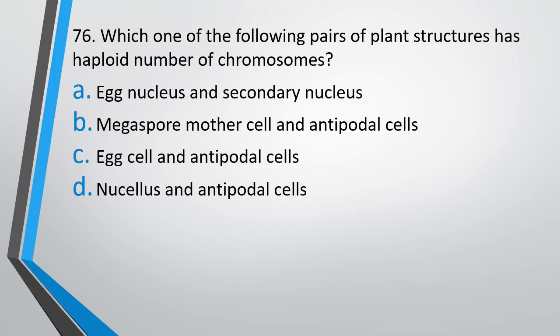Question No. 76: Which one of the following pairs of plant structure have haploid number of chromosomes? Egg nucleus and secondary nucleus, megaspore mother cell and antipodal cell, egg cell and antipodal cell, or nucellus and antipodal cell. The correct answer is option C, egg cell and the antipodal cells.